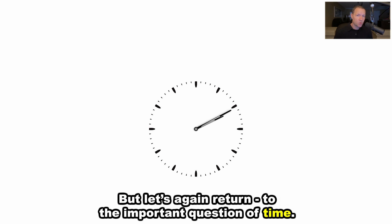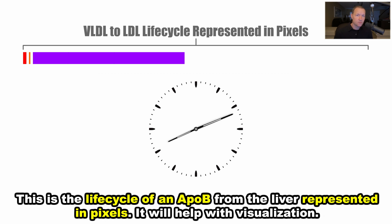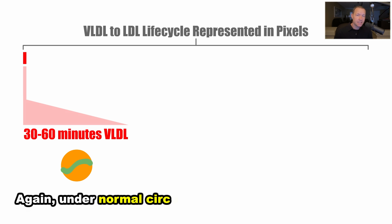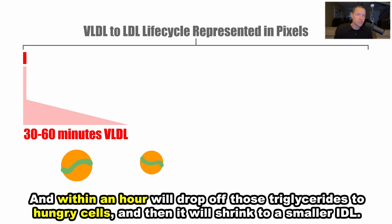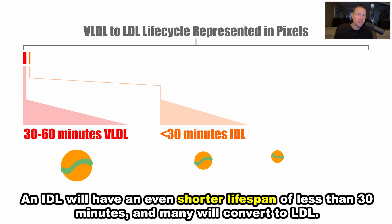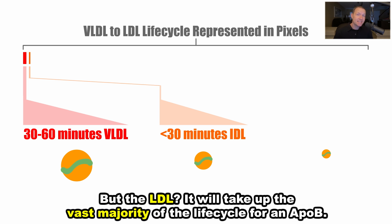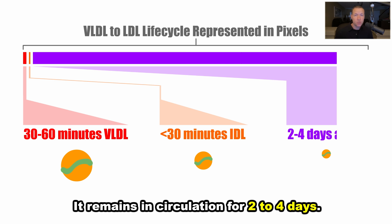But let's return to the important question of time. This is the life cycle of an ApoB from the liver represented in pixels — it will help with visualization. Under normal circumstances, a VLDL will enter the bloodstream packed with triglycerides, and within an hour will drop off those triglycerides to hungry cells, then shrink to a smaller IDL. An IDL will have an even shorter lifespan of less than 30 minutes, and many will convert to LDL. But the LDL takes up the vast majority of the life cycle of an ApoB — it remains in circulation for two to four days.